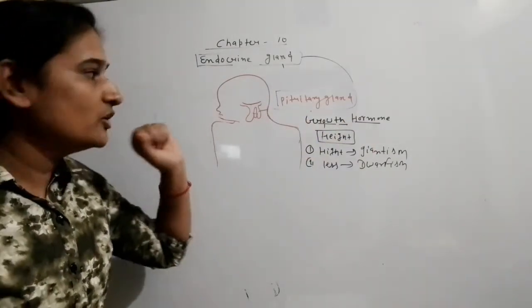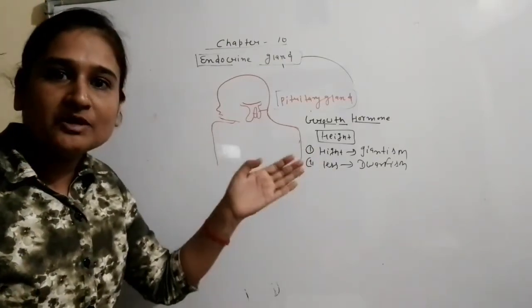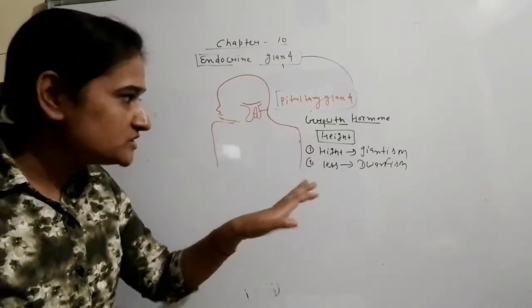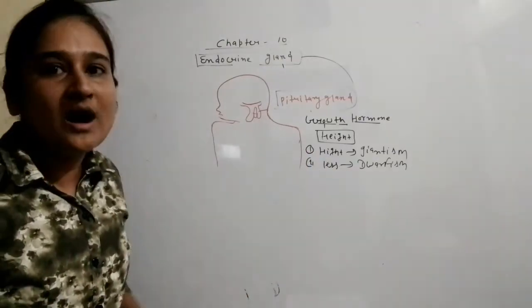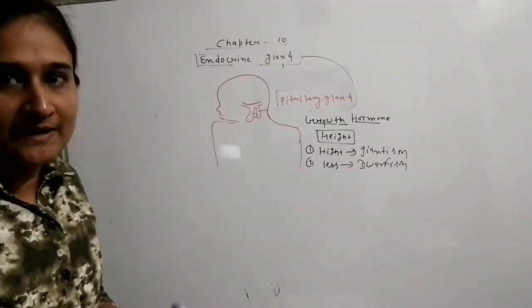If the growth hormone is secreted in excess, height becomes more — this is known as giantism. If the growth hormone is low, height is low — this is known as dwarfism.